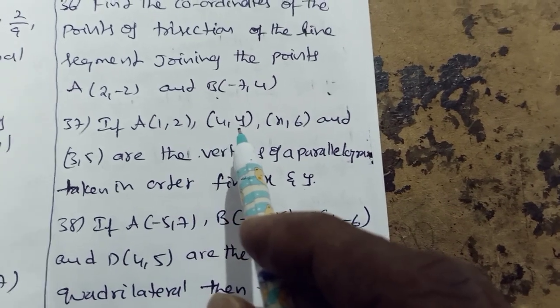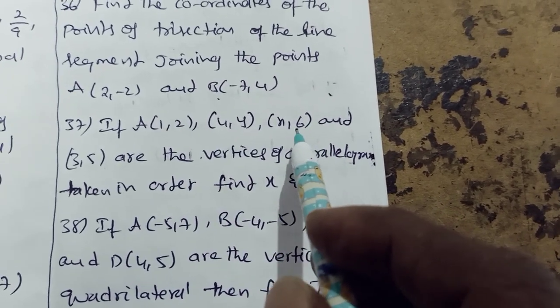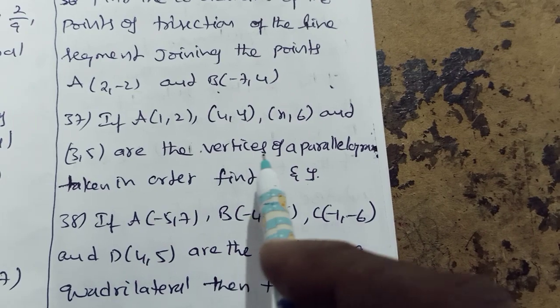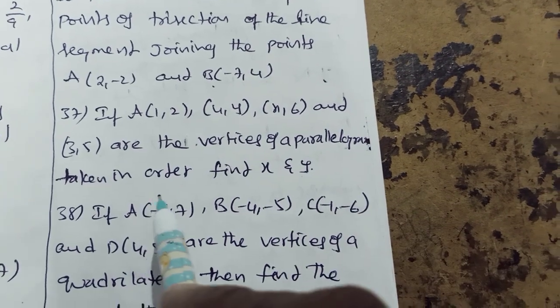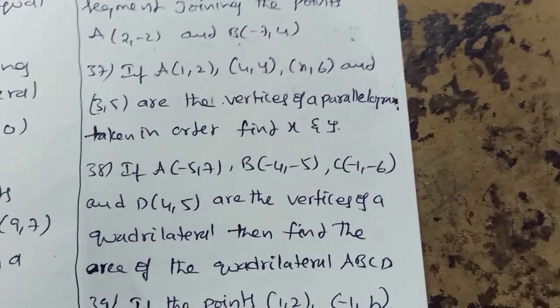If a 1 2, b 4 y, c x 6, and d 3 5 are the vertices of a parallelogram in order, find x and y. This is also very important.